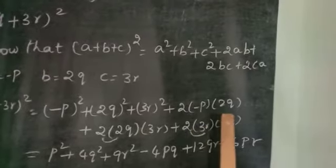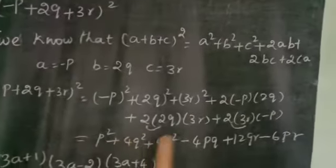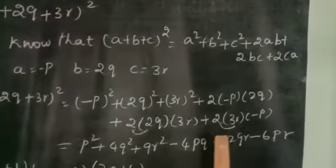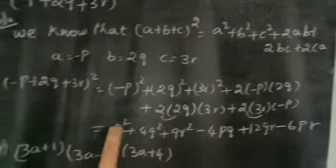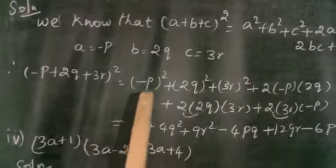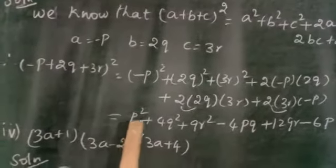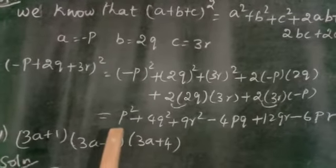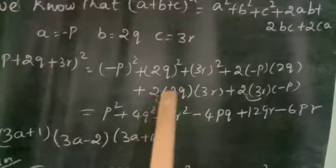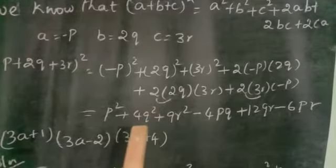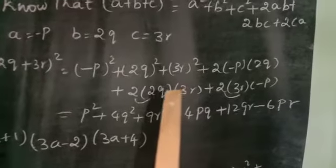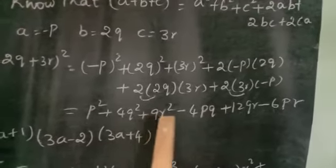2ab is 2 into minus p into 2q. Then 2bc is 2 into 2q into 3r, and 2ca is 2 into 3r into minus p. Now we expand: minus p whole square equals p square. Next, 2q whole square equals 4q square. And 3r whole square equals 9r square.